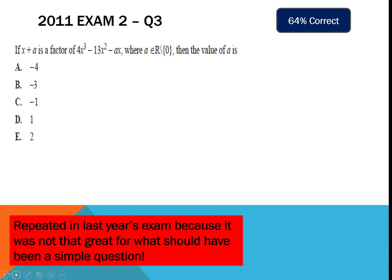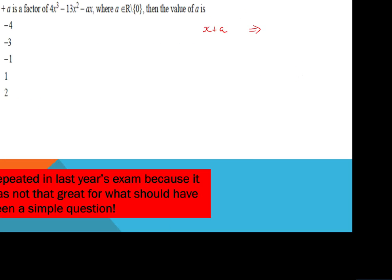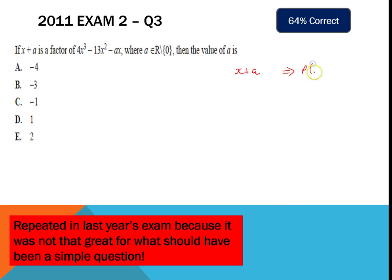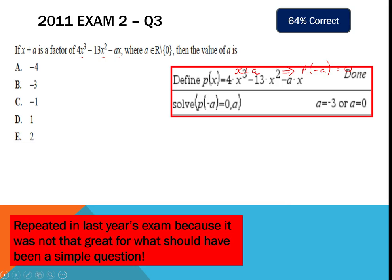This question relies on the factor theorem. When you're told something is a factor, putting that value in gives a remainder of zero. If x plus a is a factor, then P(negative a) must equal zero. Substituting negative a into the polynomial and solving for a — using your calculator or by hand — gives the answer. Note the domain excludes zero, so that option isn't valid, leaving negative 3, which is answer B.